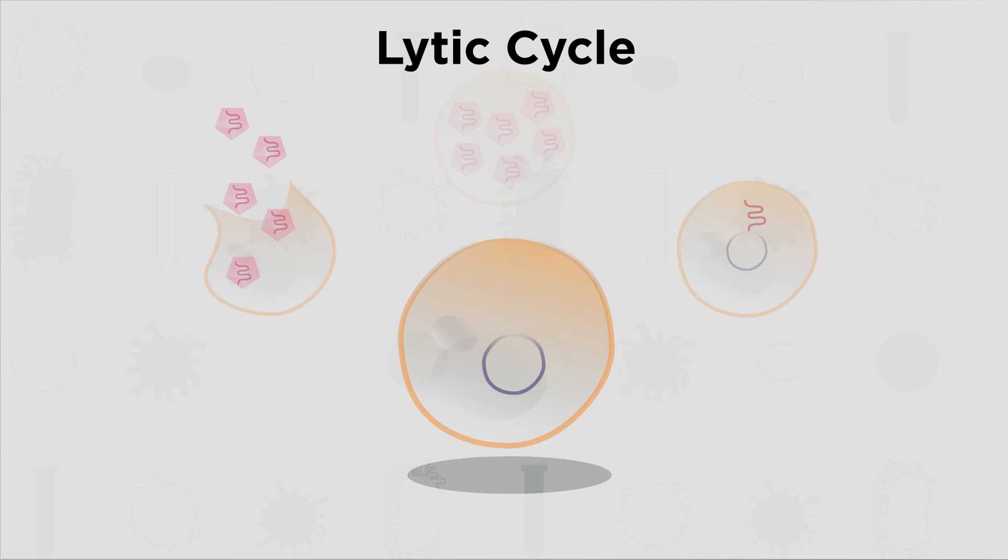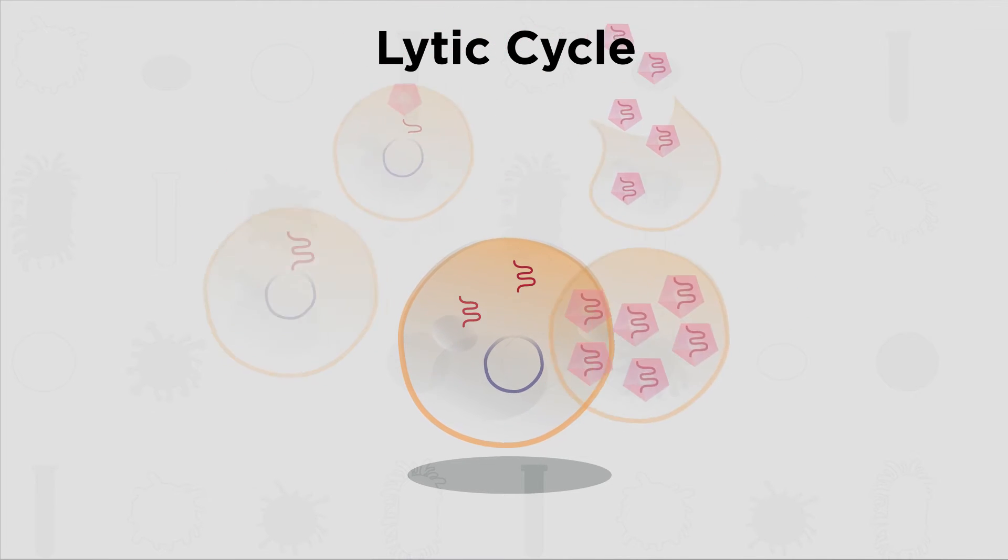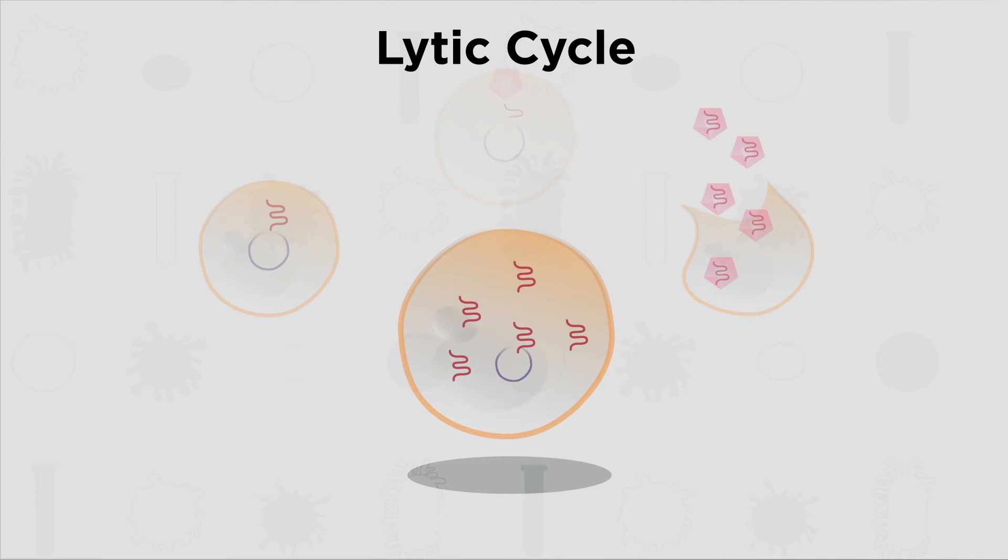In the lytic cycle, the impatient virus hijacks the cell's genetic machinery and starts making copies of the virus's genetic material. The cell then makes the virus protein coat which self-assembles, and lots of new viral particles are made.